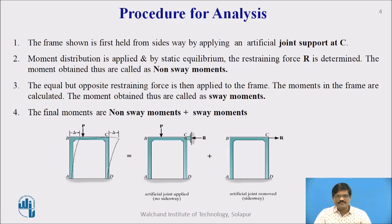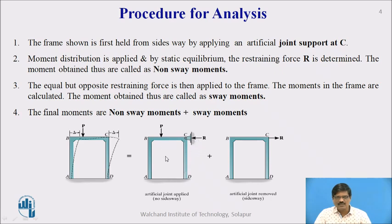We have to follow certain steps for the analysis of sway frames. First of all, the frame is held from the side sway by applying an artificial joint support at C. We have to prevent the side sway by assuming one artificial support, and carry out the moment distribution process. By static equilibrium, the restraining force R is to be determined. The moments obtained thus are called non-sway moments.